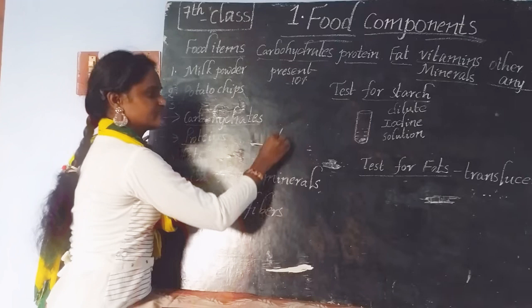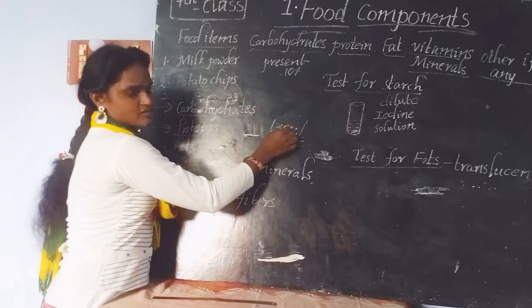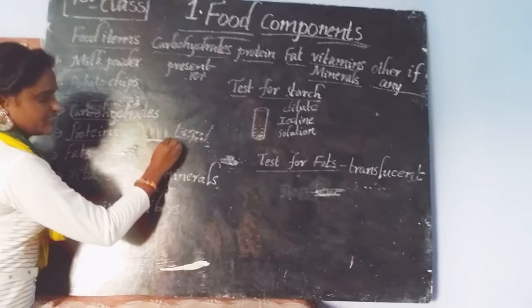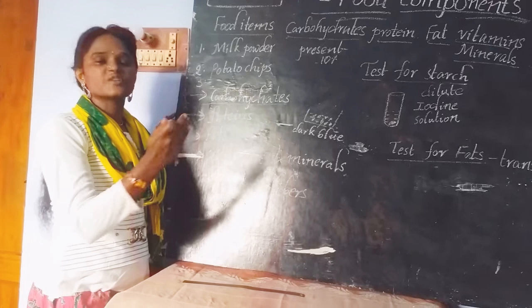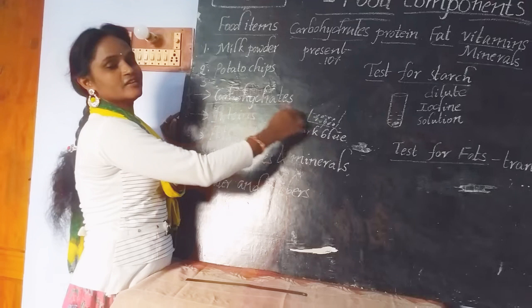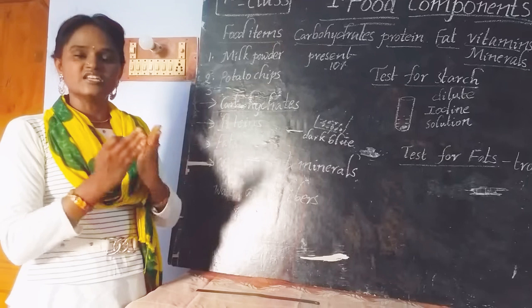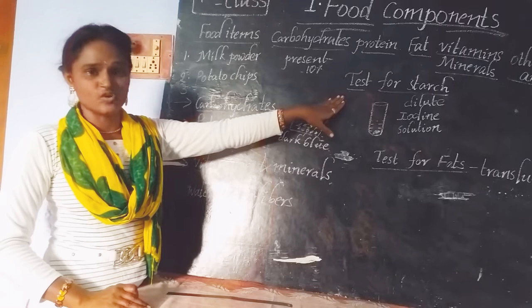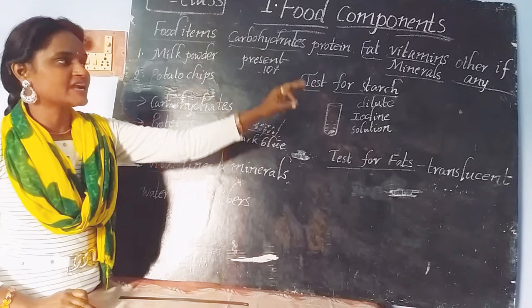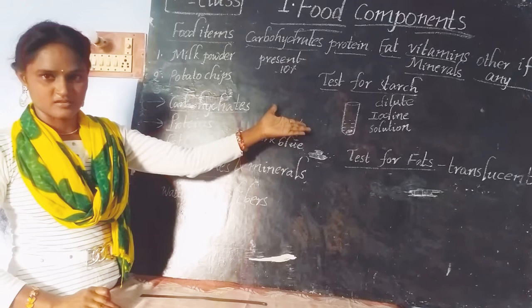For example, if you take rice in a bowl and add dilute iodine solution, mix it well, within a few minutes you find a dark blue color change. This indicates that rice contains starch — and indirectly it tells us that rice contains carbohydrates. So the starch test indicates the presence of carbohydrates. If the sample color changes to dark blue, it confirms that carbohydrates are present in that sample.